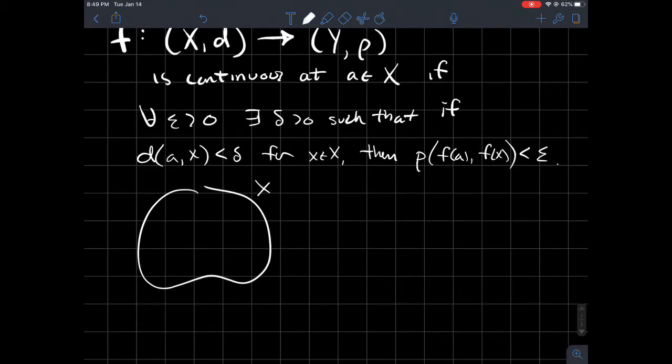On the other hand, I've got another space called Y, and I've got f(x) and f(a), and now the distance between these two points is measured by this function rho, that metric there.